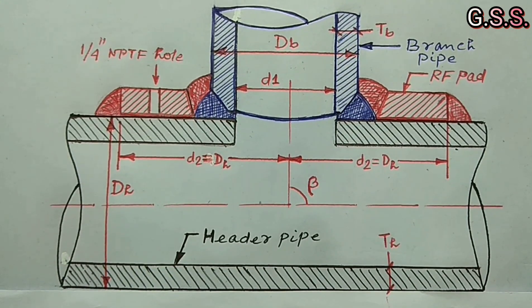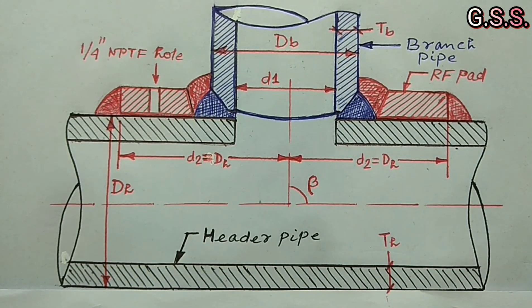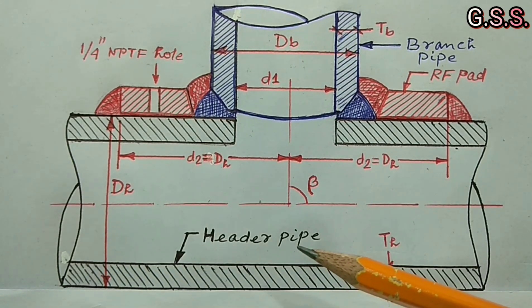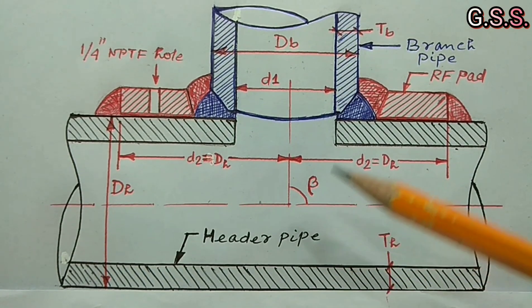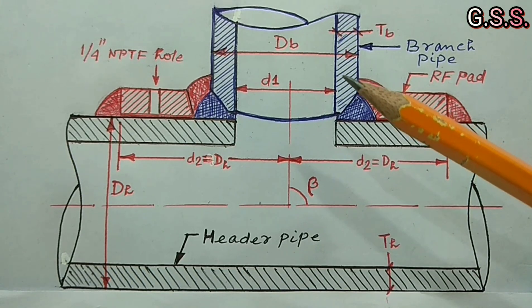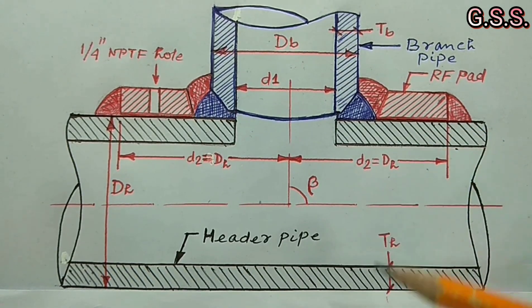This is a sketch of a reinforced branch connection with RF pad. Header pipe is shown in black color. Branch pipe is shown in blue color. And RF pad is shown in red color.